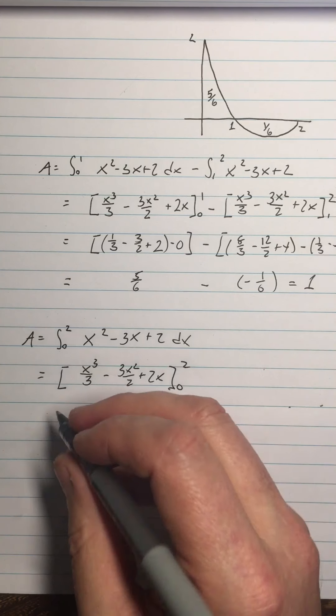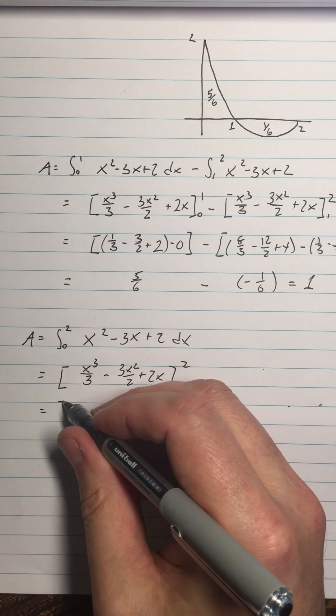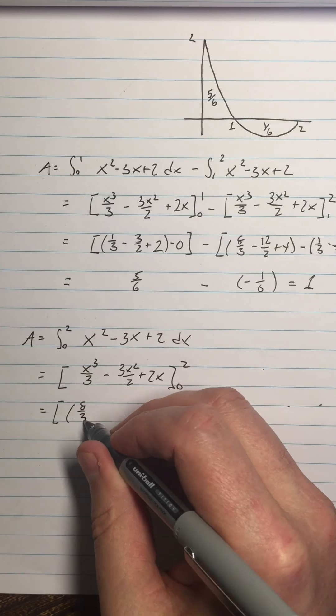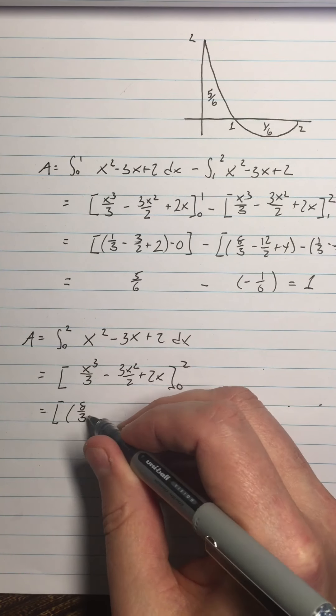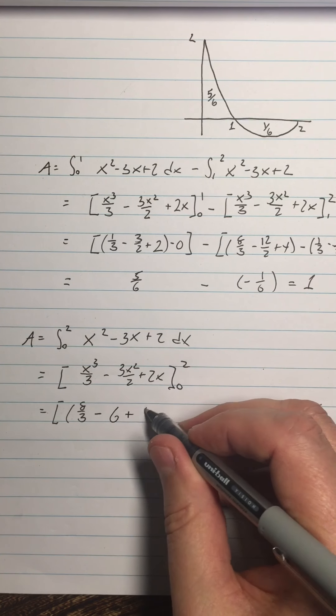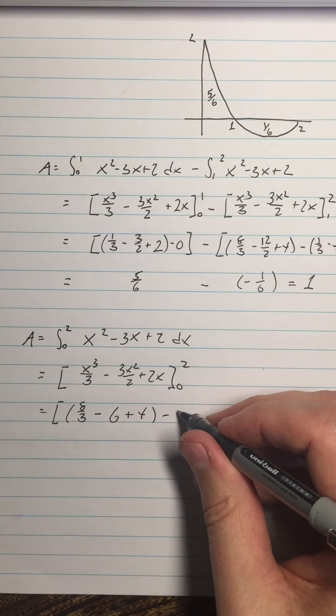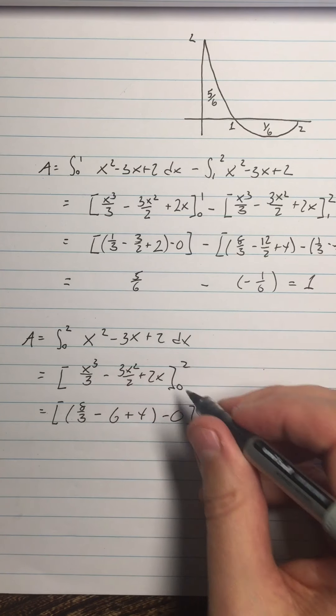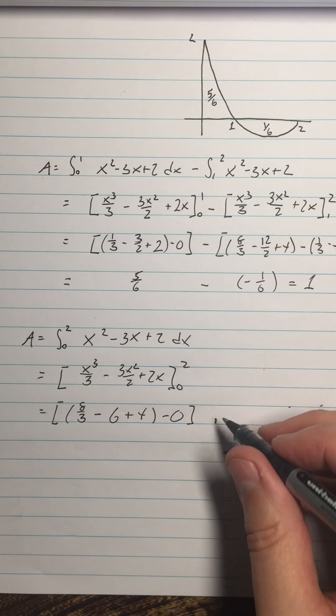And then what you'll get from doing that is you will get just 8 thirds minus, 2 would be 3 times 4 is 12, over 2 is 6, and then plus 4, and then we're going to have minus 0 there. When I plug the 0 in there it's all 0. And this equals 2 thirds.